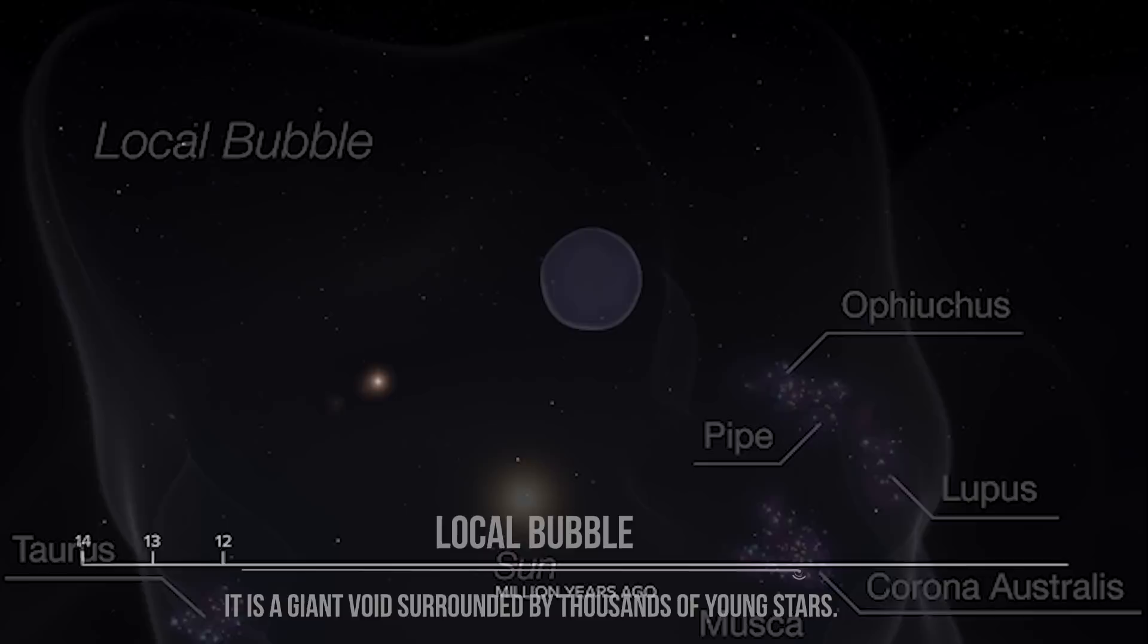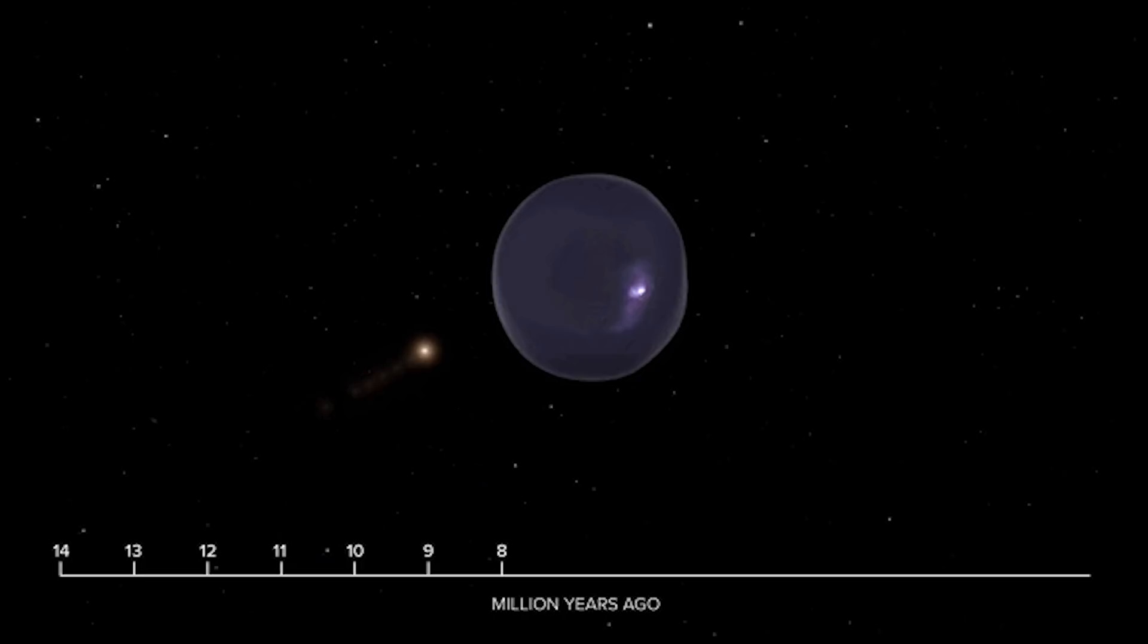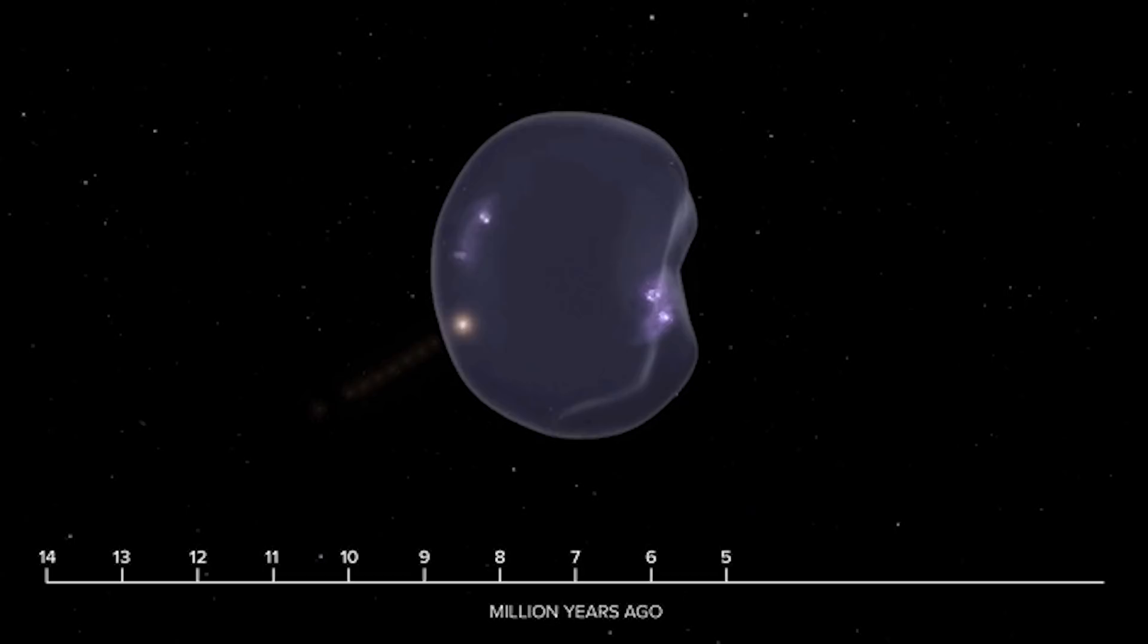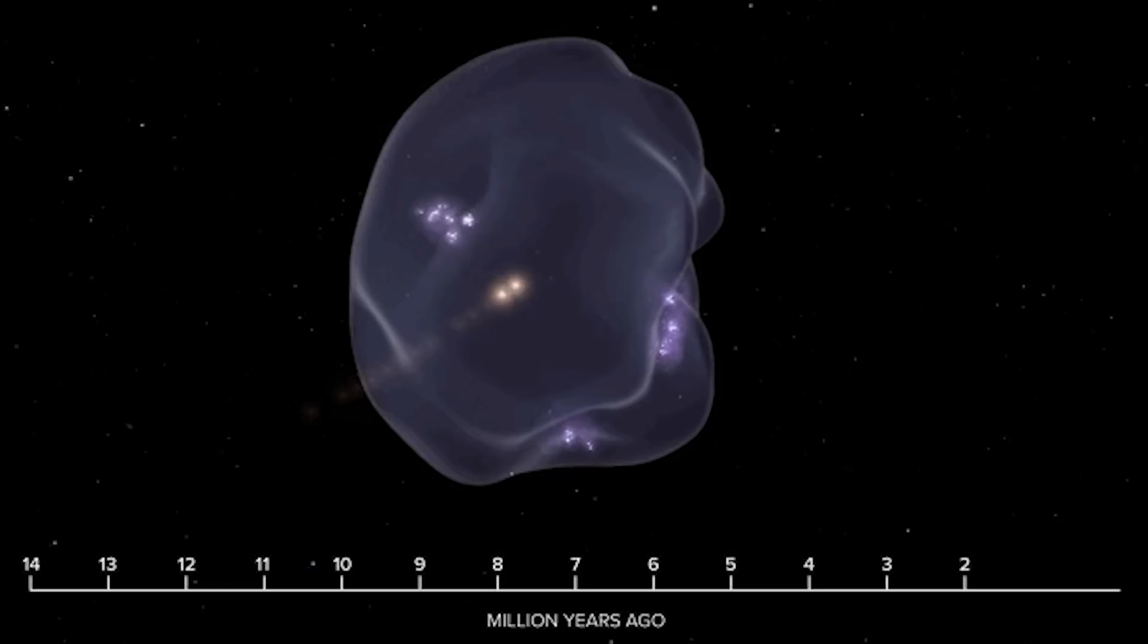For example, we don't really know how big it is. Some estimations suggest it should be something like a thousand light-years in diameter. However, we are not even sure this bubble is a perfect sphere. It is likely to have an irregular shape. It seems to be narrower in the galactic plane, becoming somewhat egg-shaped or elliptical, and may widen above and below the galactic plane, becoming shaped like an hourglass.